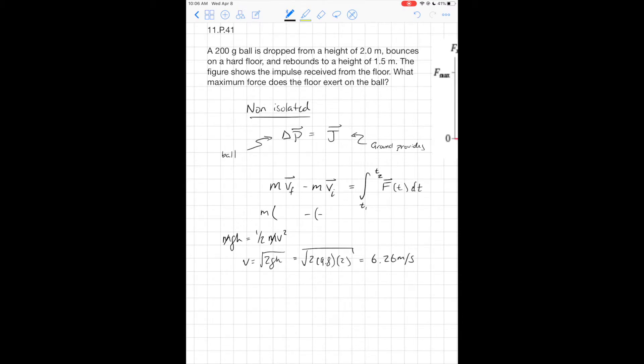Minus negative 6.26 meters per second. Now why are we saying that vi is negative? Well, it points down.